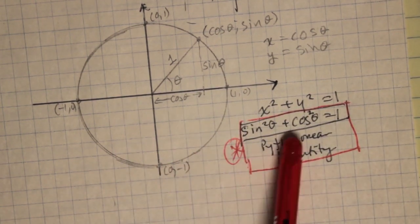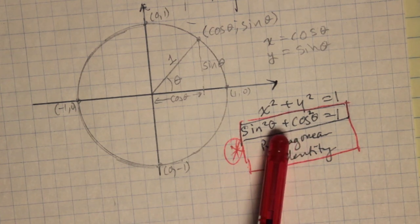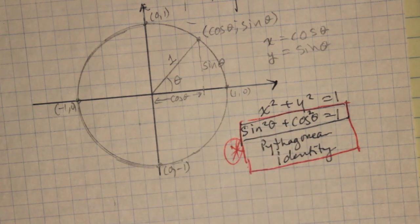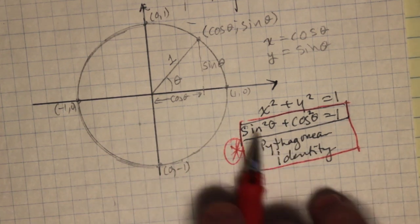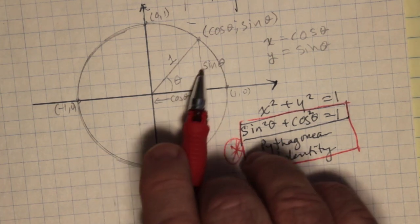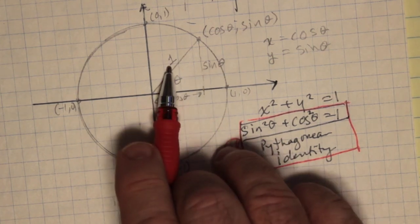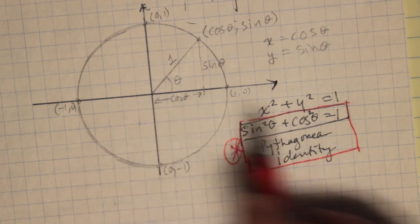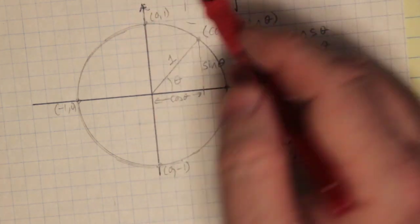This is a really important thing, because what we're going to learn in this section is related to that identity. You'll be using this again and again, not just throughout this semester, but throughout advanced functions and the trig unit. Notice that this is nothing more than opposite squared plus adjacent squared equals hypotenuse squared — one squared is just one anyway.